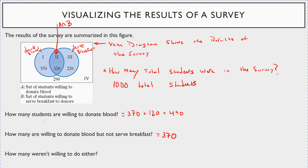How many weren't willing to do either? That's the 290 students outside both sets — those who didn't want to donate blood or serve breakfast. This is how you look at a Venn diagram and discern answers to questions from it.